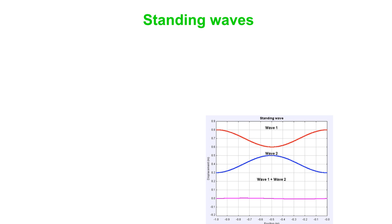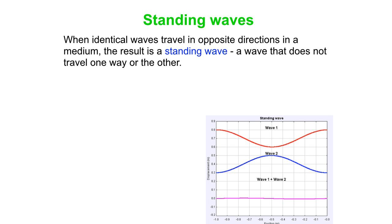When you have identical waves traveling in opposite directions in a medium, the result is a standing wave. The wave goes down on the string and it reflects and comes back.